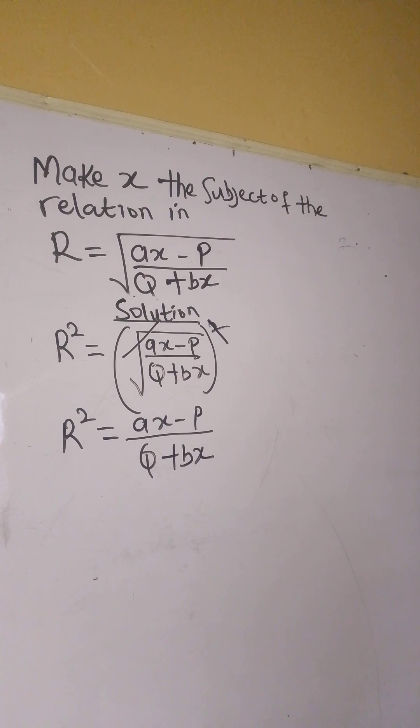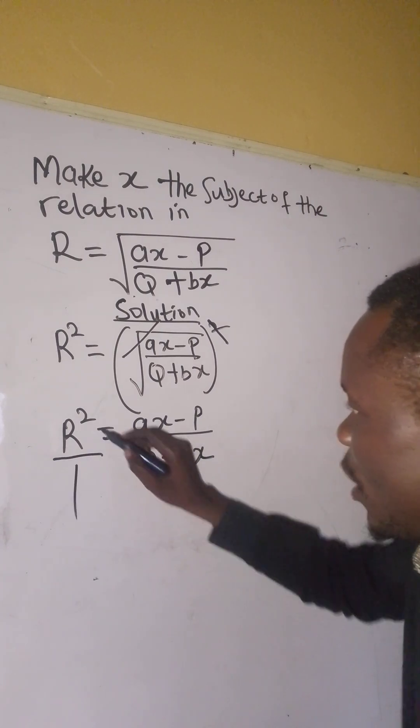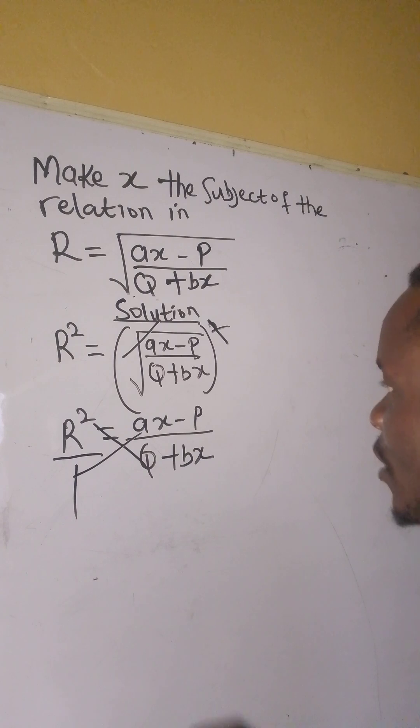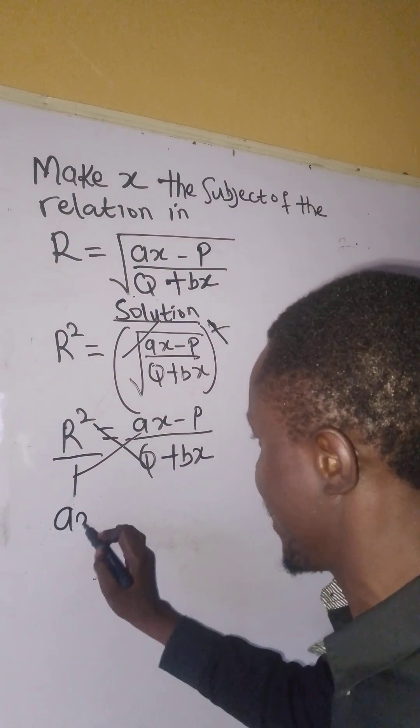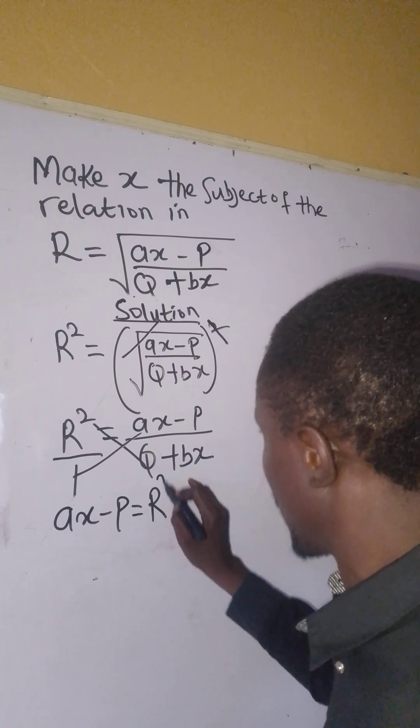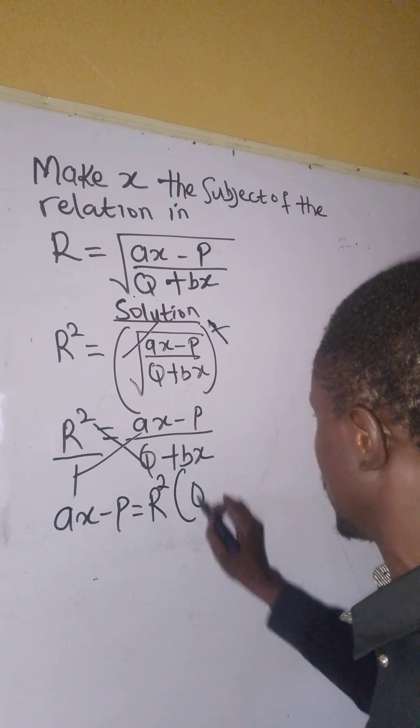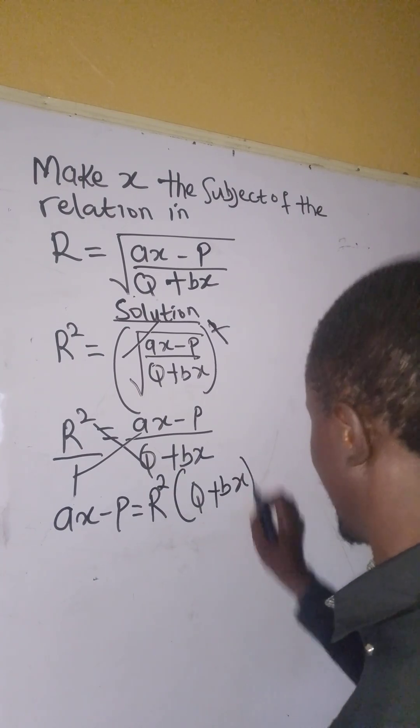Now the first mountain has been removed. We can move forward. We make this over 1 and cross multiply. So 1 times this value gives us ax - b = r²(q + bx).